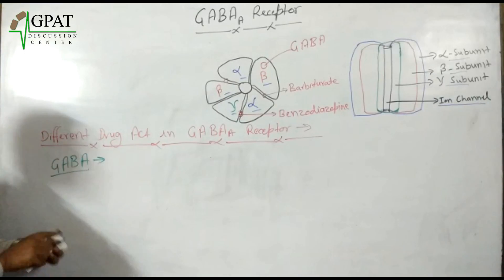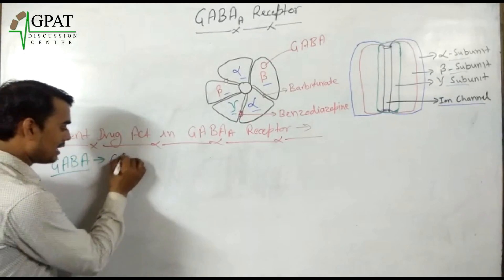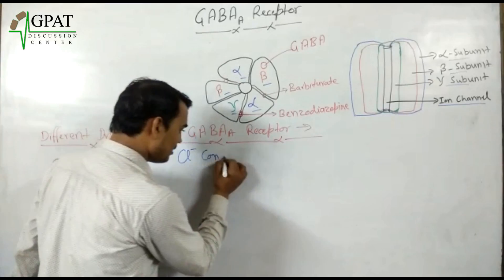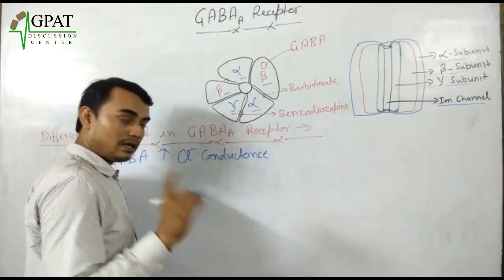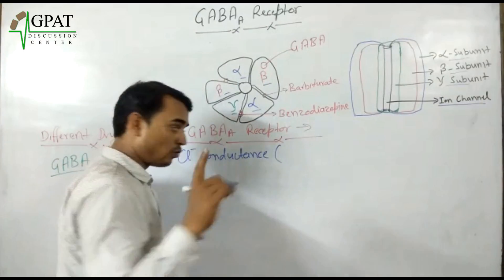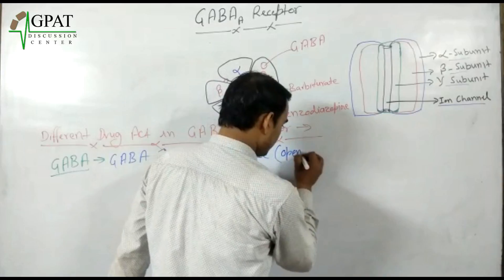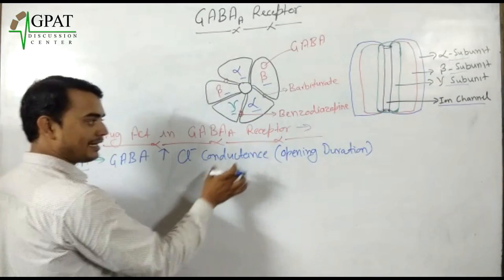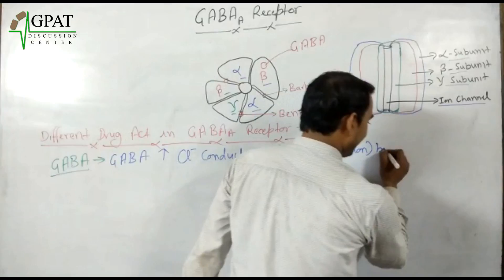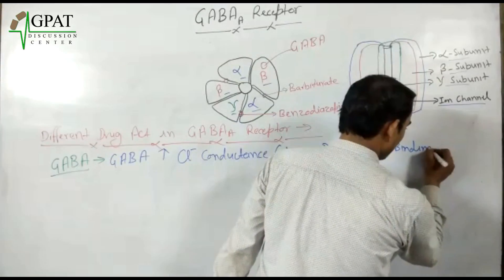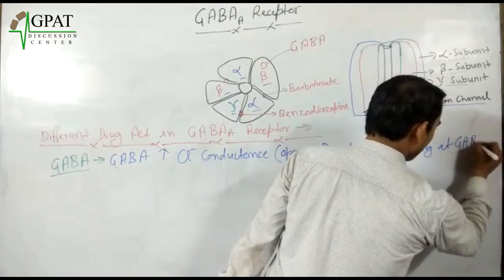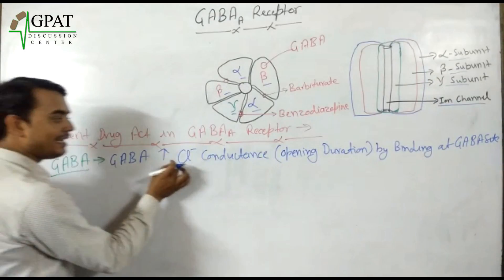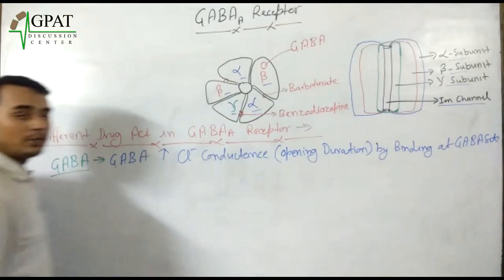As we have discussed, gamma — gamma increases chloride ion conductance by increasing the opening duration. Binding at the gamma site leads to increased chloride conductance, meaning the duration of channel opening increases.